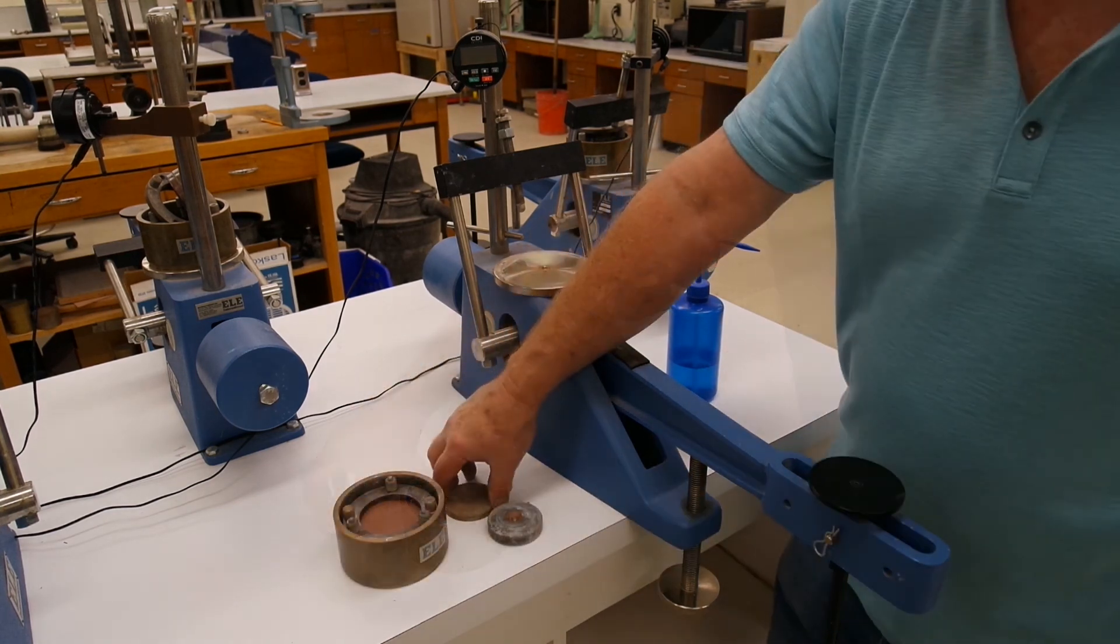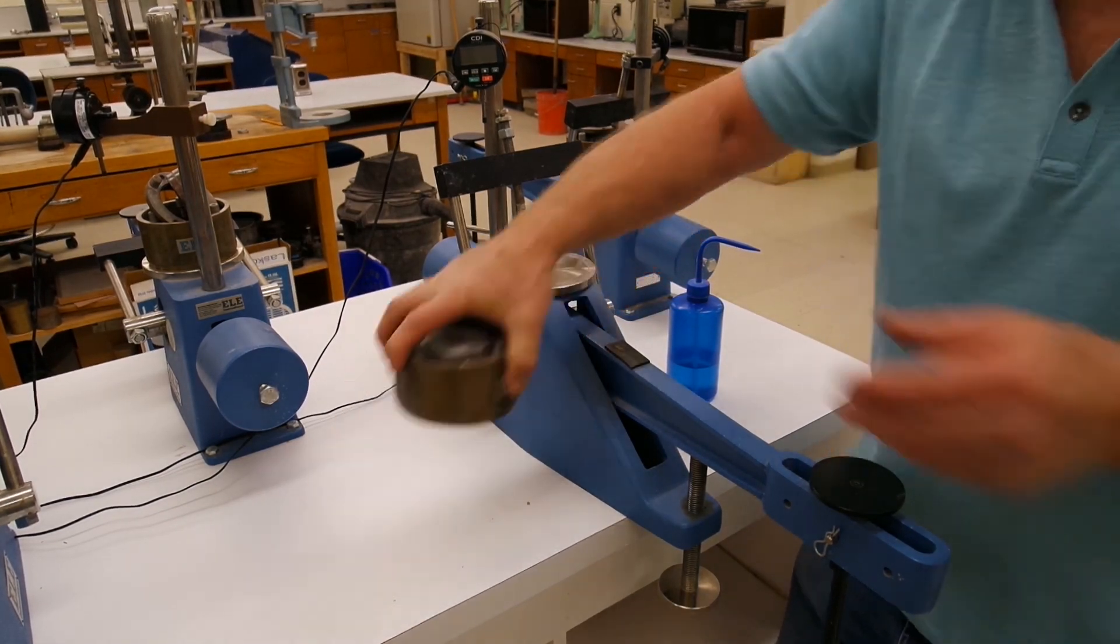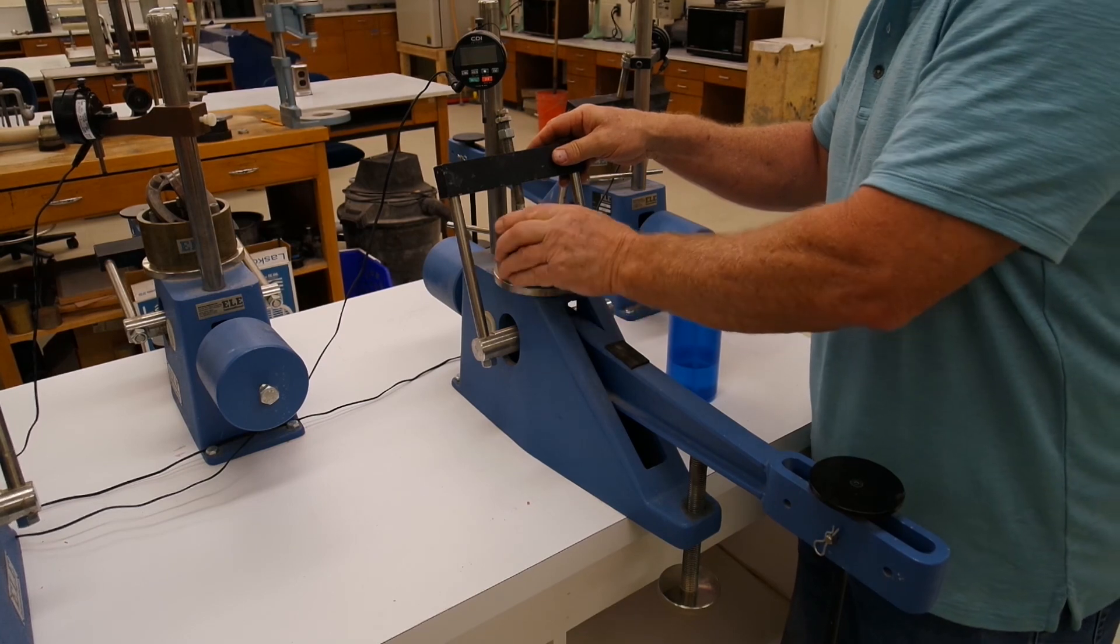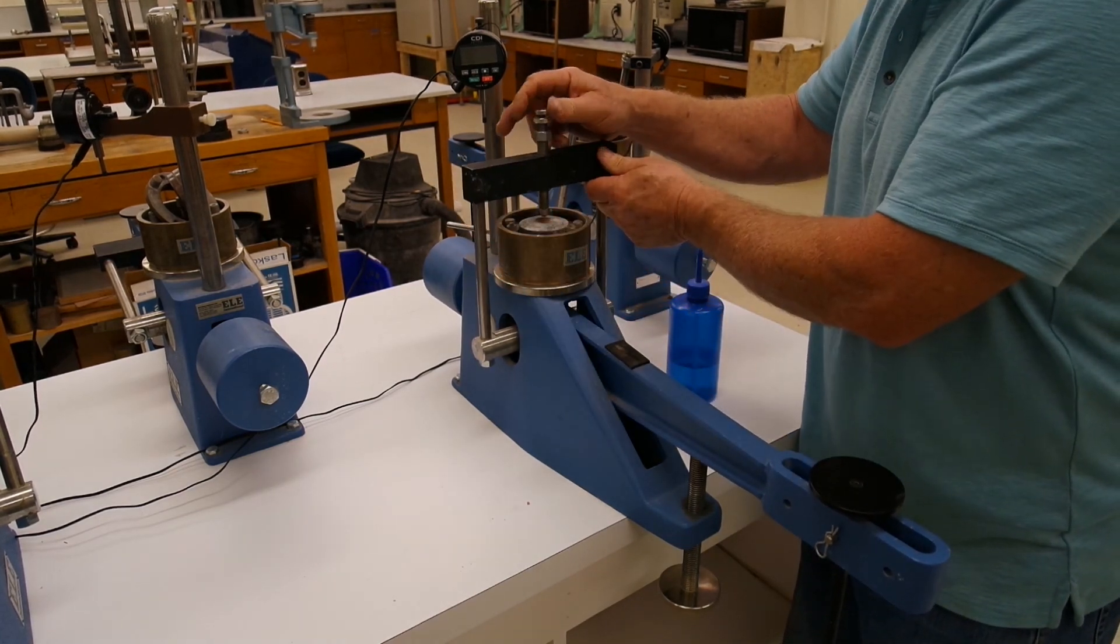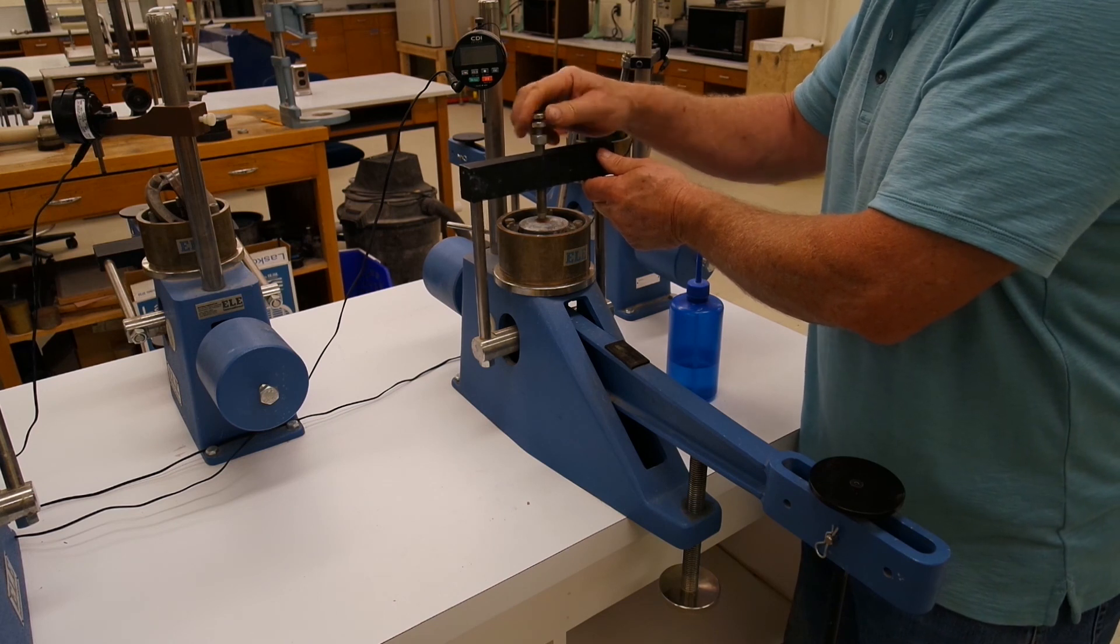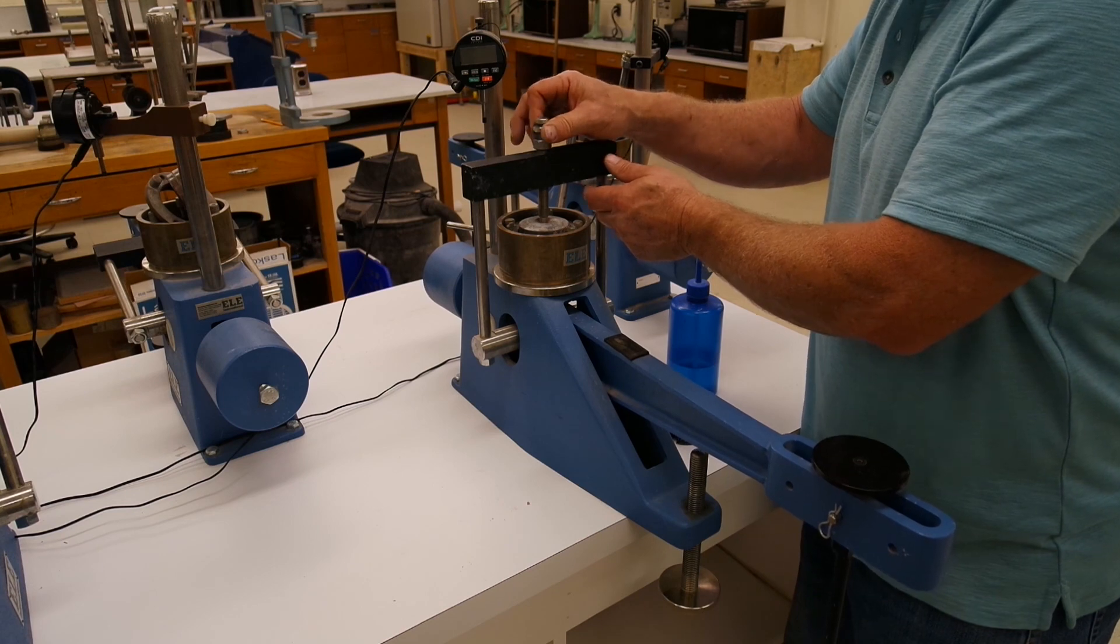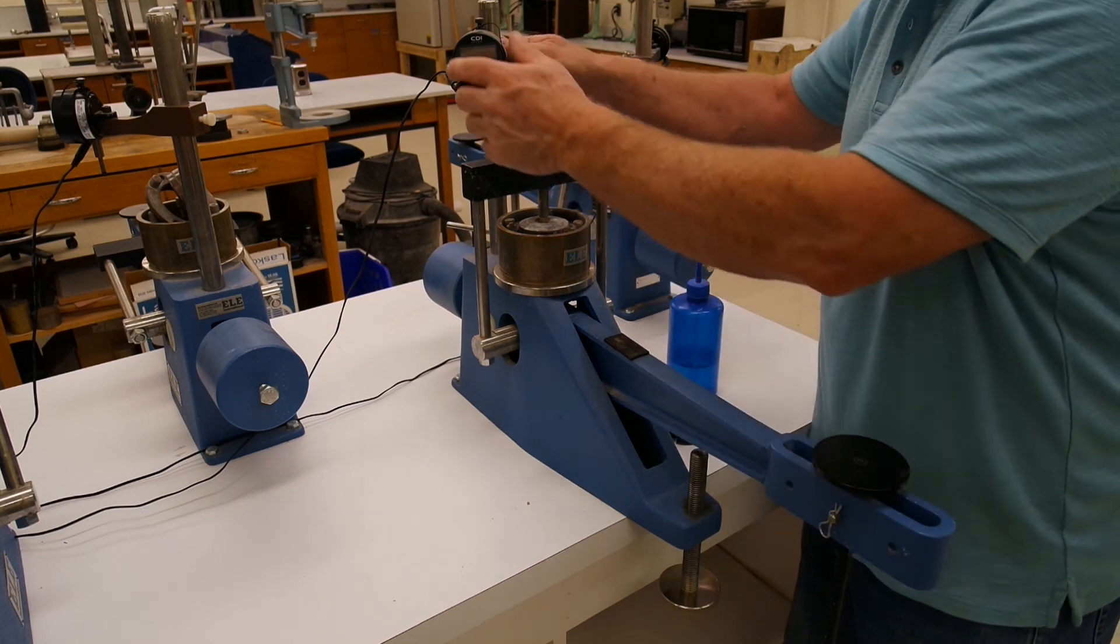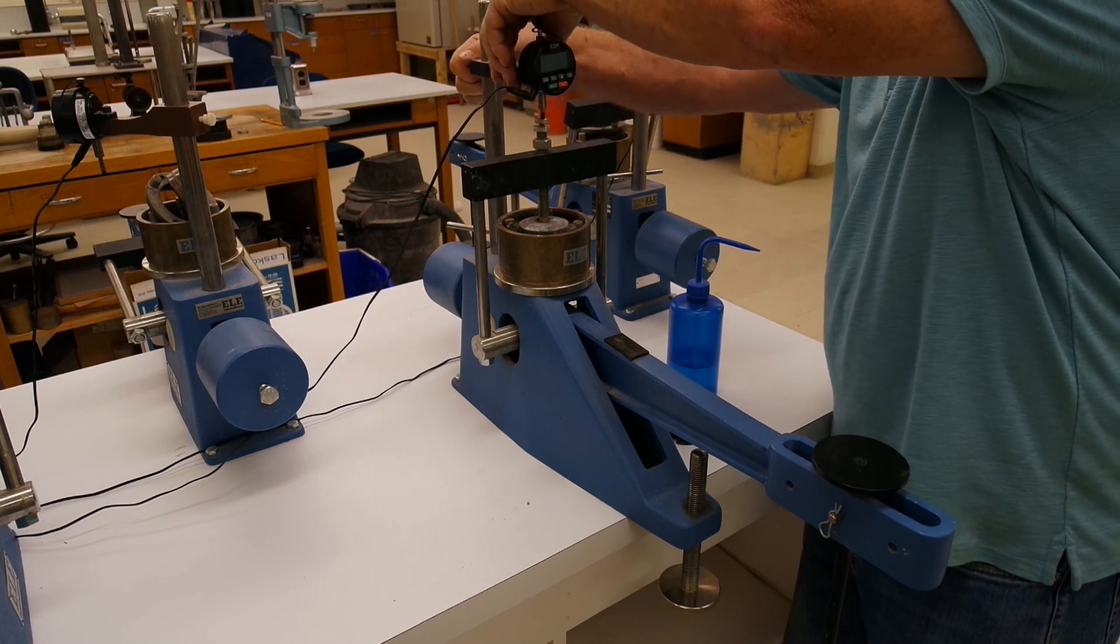Once this is done we will position our lever arm on top to allow us to load the sample. This lever arm has a ten-to-one ratio. Then position the digital gauge on top so that we can get a consolidation measurement. Leave enough room for the gauge to accommodate a small amount of swelling. Then add distilled water to the water reservoir.